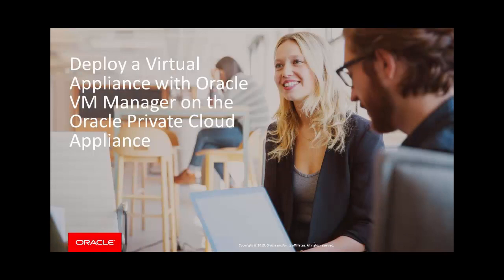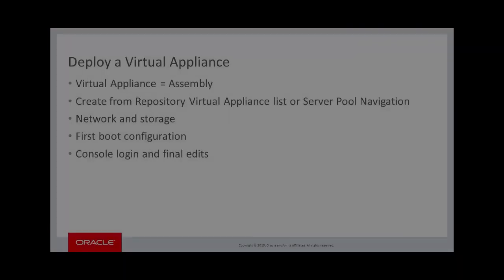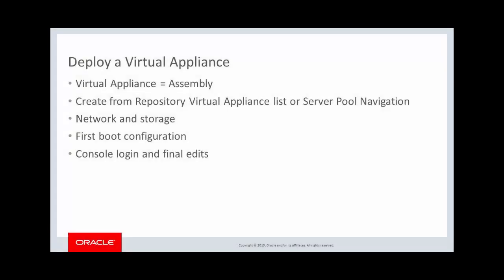Hello and welcome to this presentation. We discuss how to deploy the virtual machine of a virtual appliance into the Oracle VM environment on the Oracle Private Cloud Appliance. A virtual appliance is a file that includes a bundle of one or more virtual machines, a descriptor file, and any other files needed, such as certificates. Another term for this kind of file is assembly, but the file extension is always .ova.